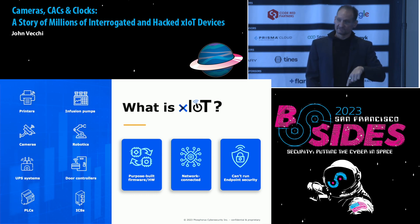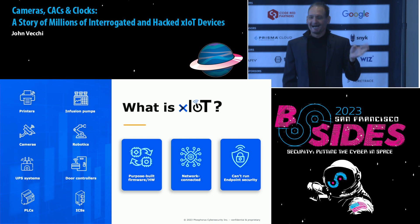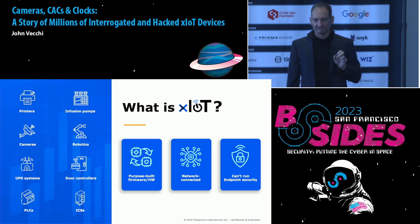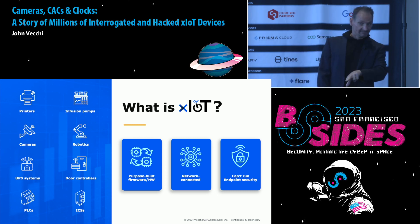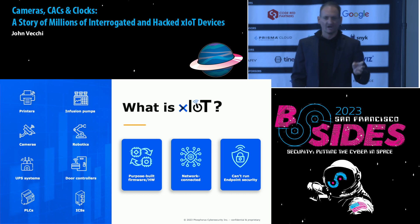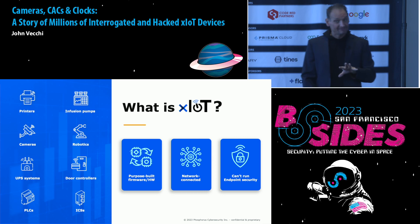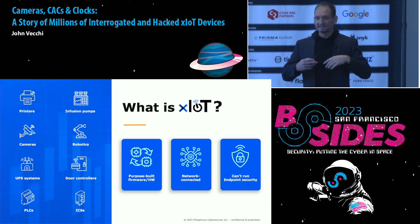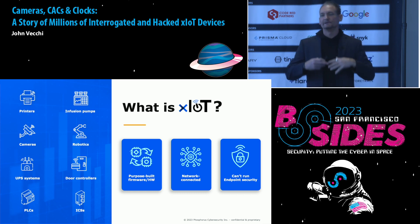Then you have OT — operational technology. These are things like ICS devices, PLCs, critical infrastructure, SCADA devices. Then you have IoMT devices — Internet of Medical devices — things like infusion pumps, wearable medical devices. These are oftentimes life-critical devices. And then you have IIoT, Industrial Internet of Things, which would be in discrete and batch manufacturing. So there are tons of these devices.